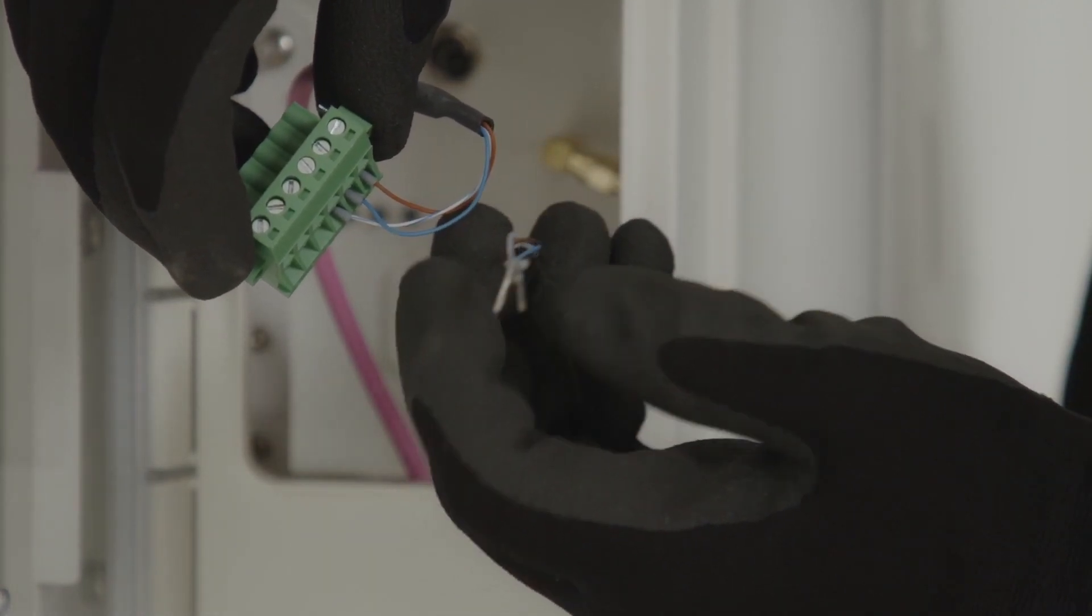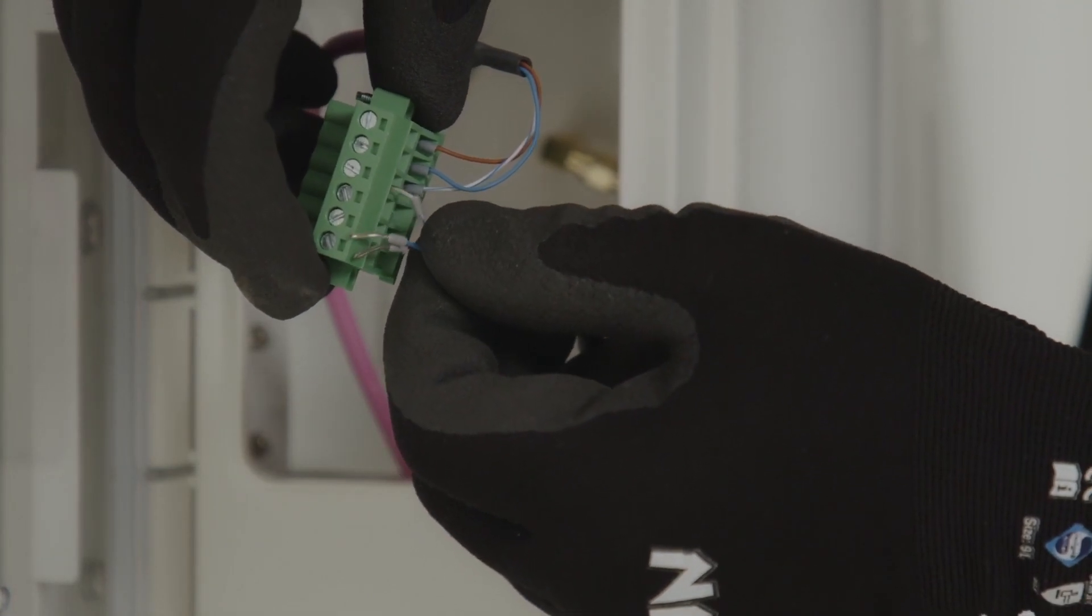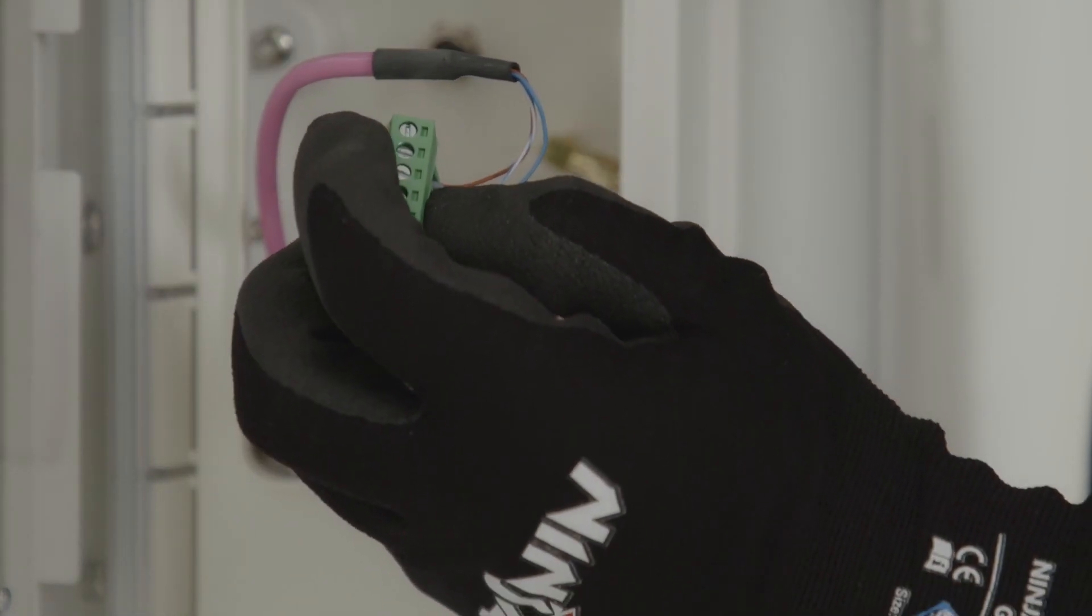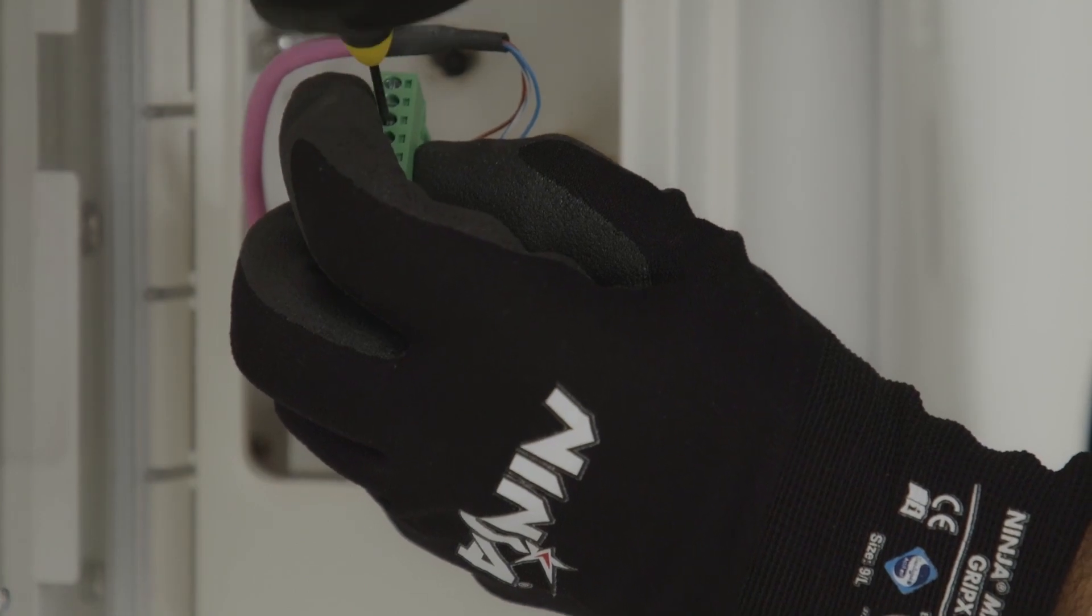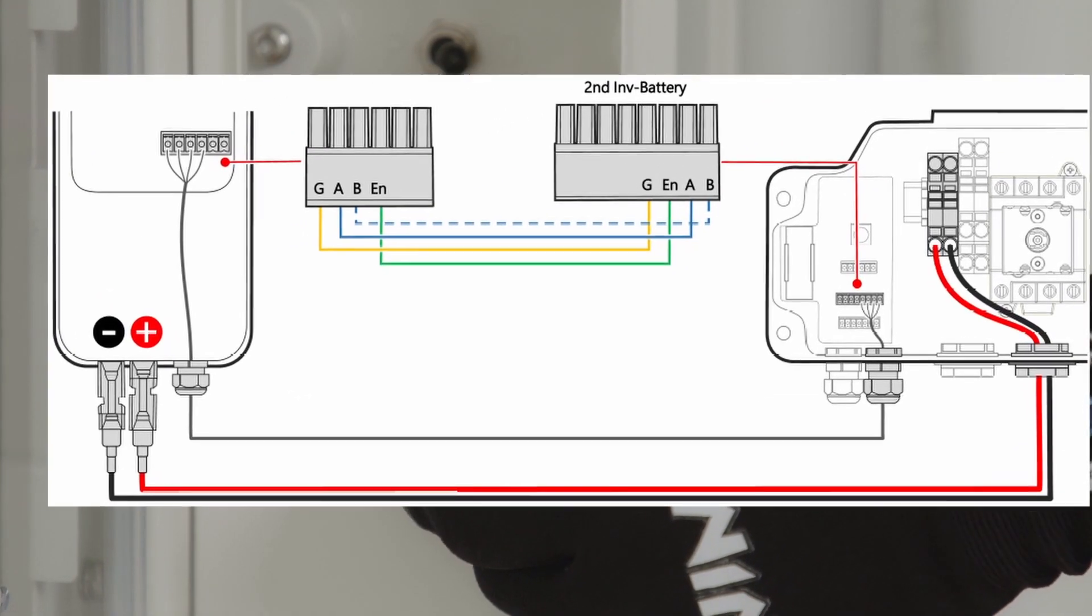If two SolarEdge batteries are being paralleled together, or three, the RS485 connection can be daisy-chained between each. As you'll see on the terminal block, there is an in and out connection for the RS485, so simply wire the adjacent SolarEdge home battery to the spare port on the terminal block.